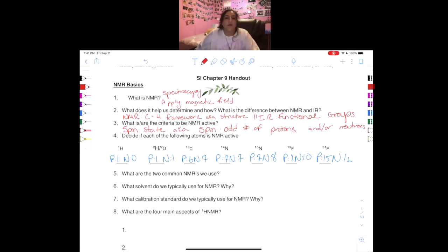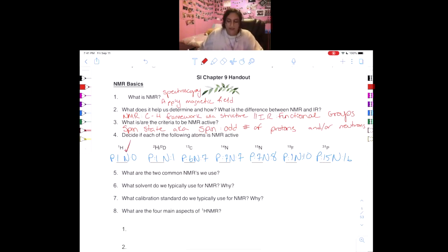H1 is going to have one proton and zero neutrons. One is in fact an odd number, so this checks out. And then we have an isotope of hydrogen, which would be H2 or deuterium we like to call it. And I want you guys to remember that when we have isotopes of an atom, we are only ever going to add or take away neutrons. You are never ever going to add or take away protons.